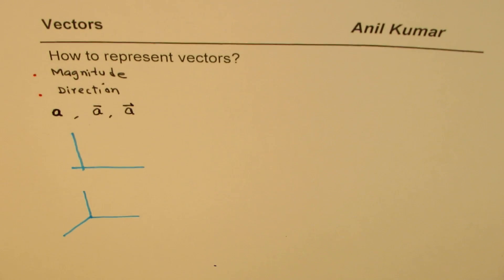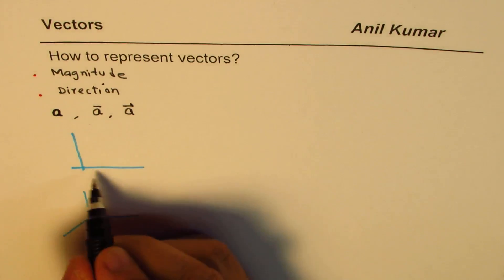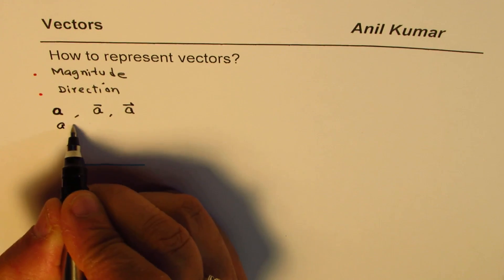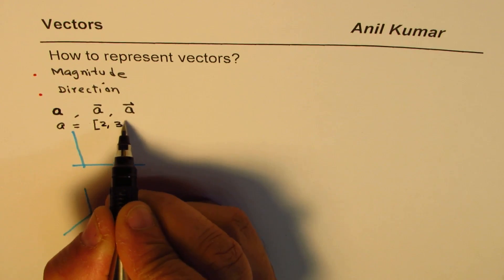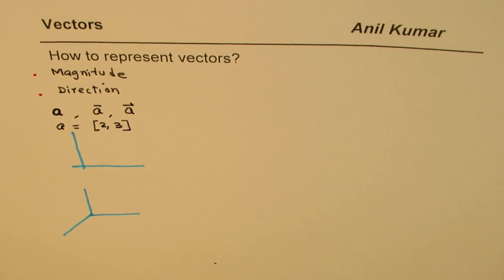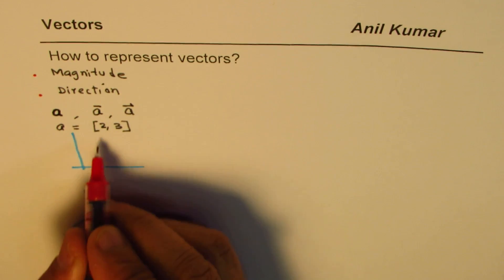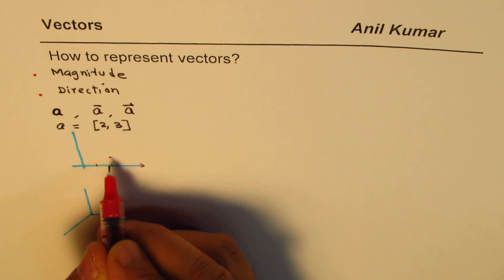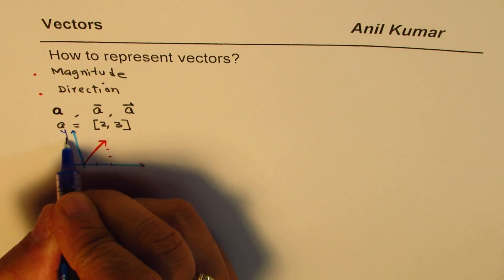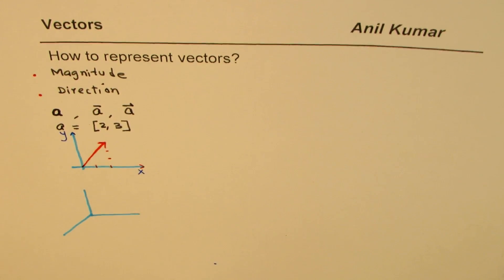Let me consider the XY plane first. Let's say vector a equals (2, 3). This means along the x-axis you go 1, 2 and along the y-axis you go 1, 2, 3. That gives you the vector from the origin — so that is vector (2, 3) in the XY plane.